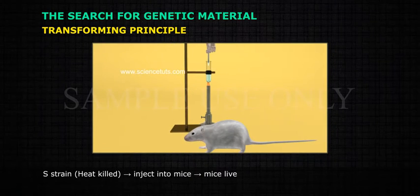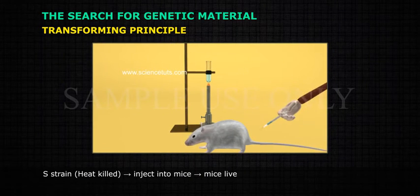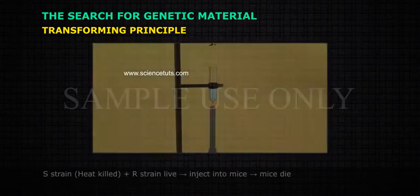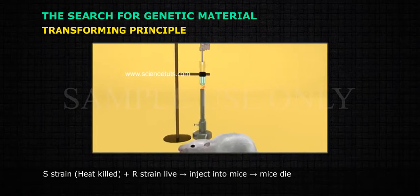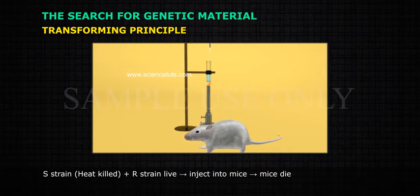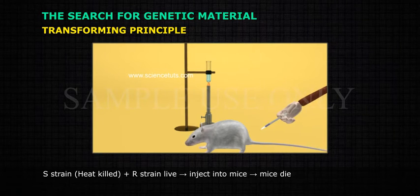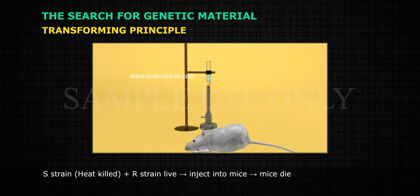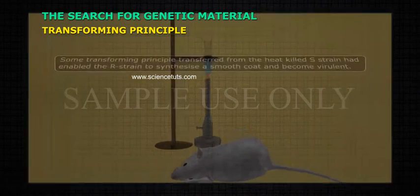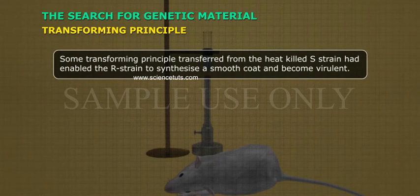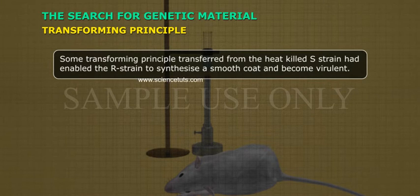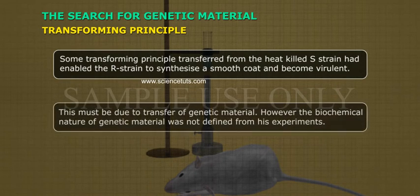Summary of results: S strain heat-killed injected into mice — mice live. S strain heat-killed plus live R strain injected into mice — mice die. Some transforming principle transferred from the heat-killed S strain had enabled the R strain to synthesize a smooth coat and become virulent. This must be due to the transfer of genetic material.